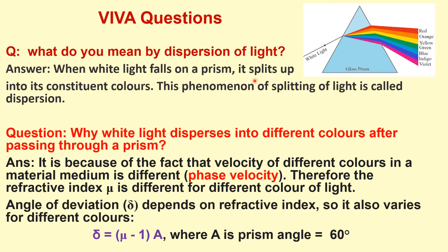Now some basic viva questions. What do you mean by dispersion of light? When white light falls on a prism it splits into its constituent colors — VIBGYOR — and this phenomenon of splitting of light is called dispersion.